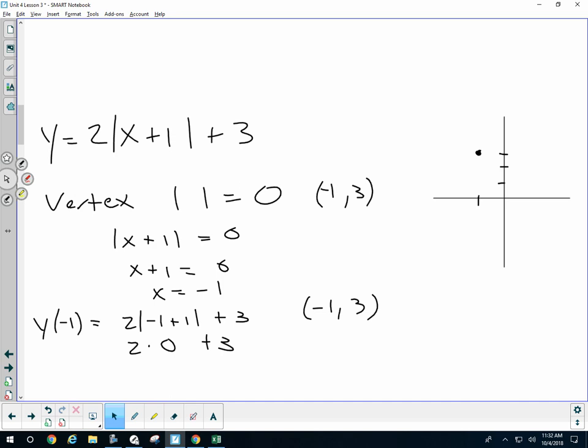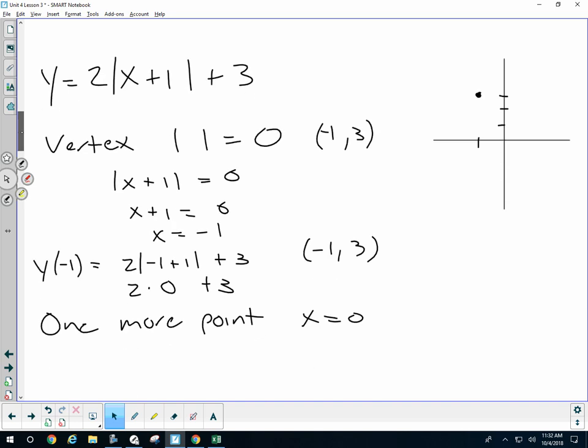Then find the y-coordinate. All I need is one other point. If I got negative 1, might as well use 0, or 1, or 2. It doesn't matter. Might as well just be pretty close to my vertex. I'm going to look at 0.